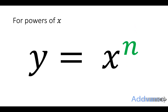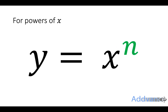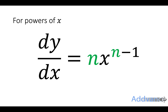Now a slightly harder version is when you've got powers of x. And actually the rule is really simple here again. The rule is you multiply down by the power and then you take one off the power. So y equals x to the power n becomes nx to the power n minus 1.